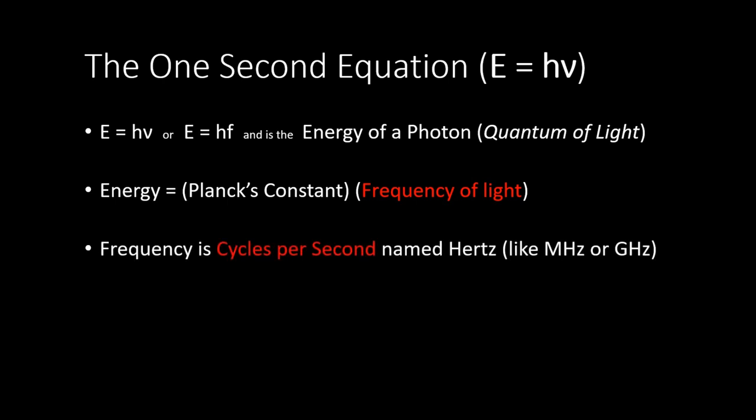Frequency is the one that locks this equation into a one-second equation. Frequency is defined as cycles per second. When you look at 'per second,' that pretty much defines that you need to wait for one second of time for all the cycles to come through — all the waves or oscillations. A more familiar term we use today is megahertz and gigahertz, used to describe our electronics like phones, computers, or Wi-Fi routers.